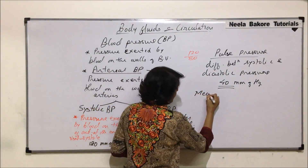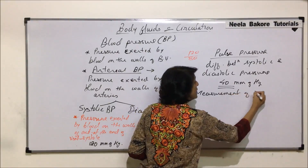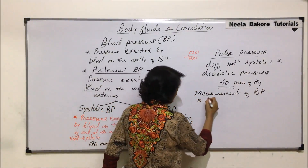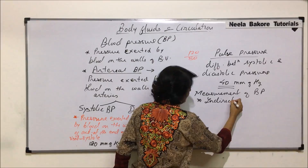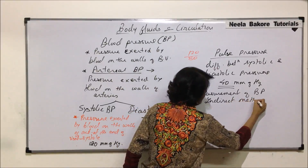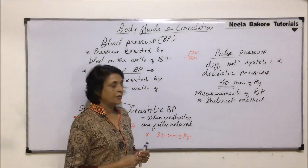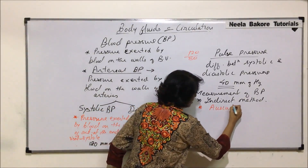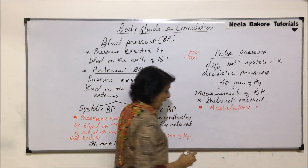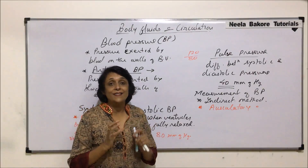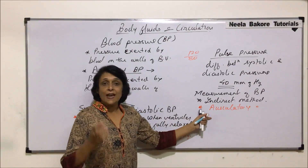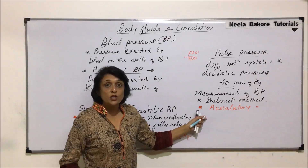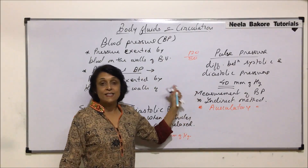The measurement of blood pressure is done by an indirect method. This indirect method is known as the auscultatory method. Here the pressure is not directly measured from the blood. First, the blood pressure is converted into air pressure, and that air pressure pushes a mercury column, and that is how we measure it.